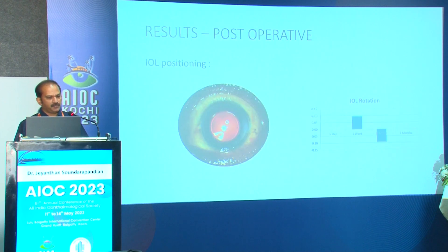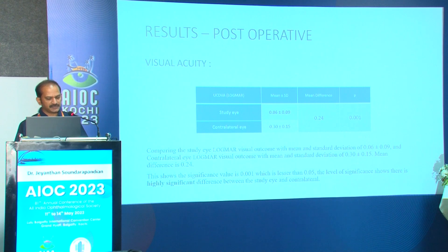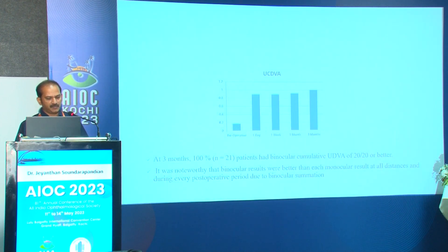IOL positioning was maintained throughout the postoperative period with no significant rotation — all lenses remained on-axis. Comparing the study eye logMAR visual outcome (mean 0.06 ± 0.09) with the contralateral eye (mean 0.3), the mean difference was 0.24 with a significance value of 0.001, indicating a highly significant difference. At three months, patients achieved binocular visual acuity of 20/20 or better, with binocular results superior to each monocular result at all distances due to binocular summation.